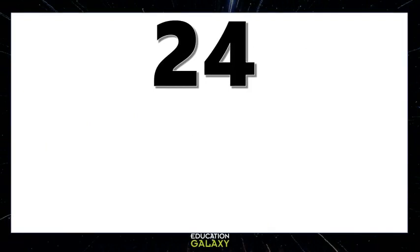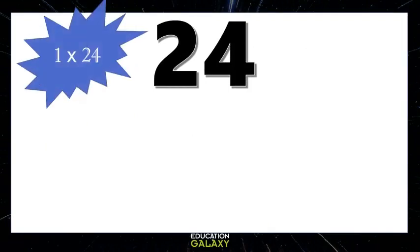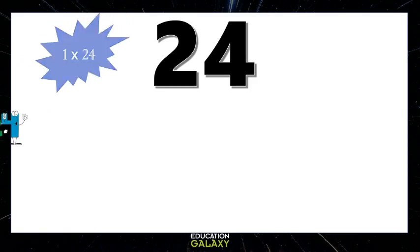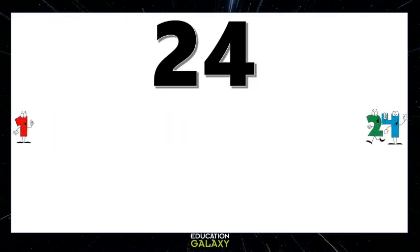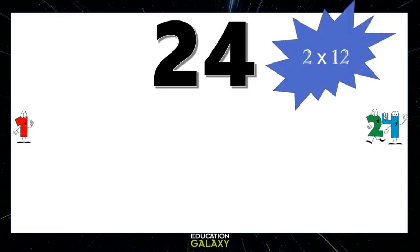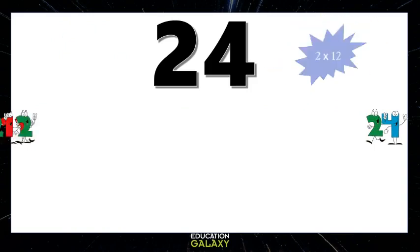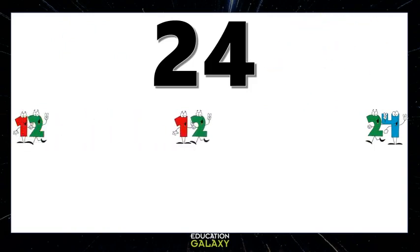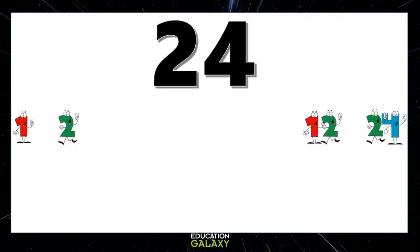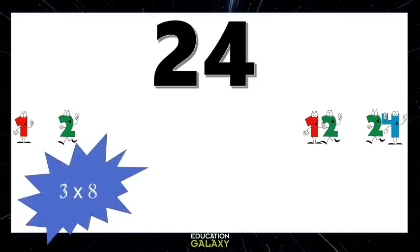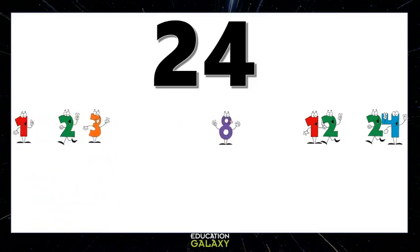We know that 1 times 24 is 24, so both 1 and 24 go into 24 evenly. 2 times 12 equals 24, so that means 2 and 12 are factors. 3 times 8 is 24, so they're factors too.